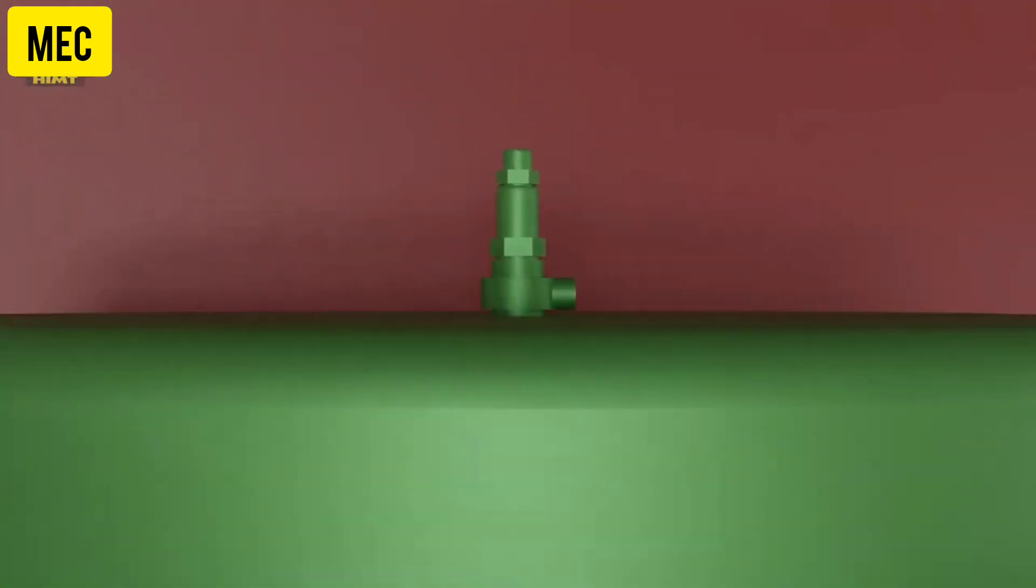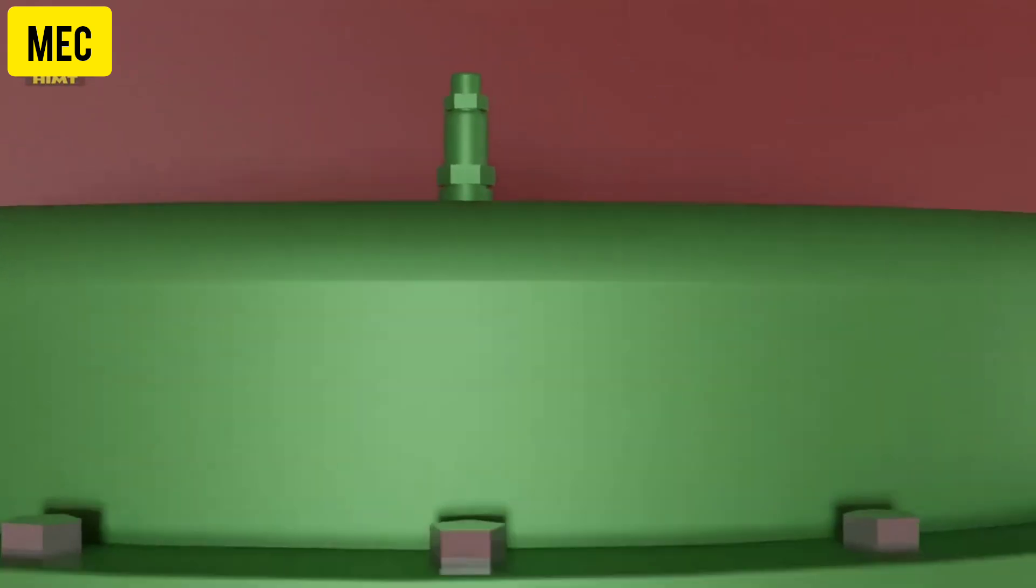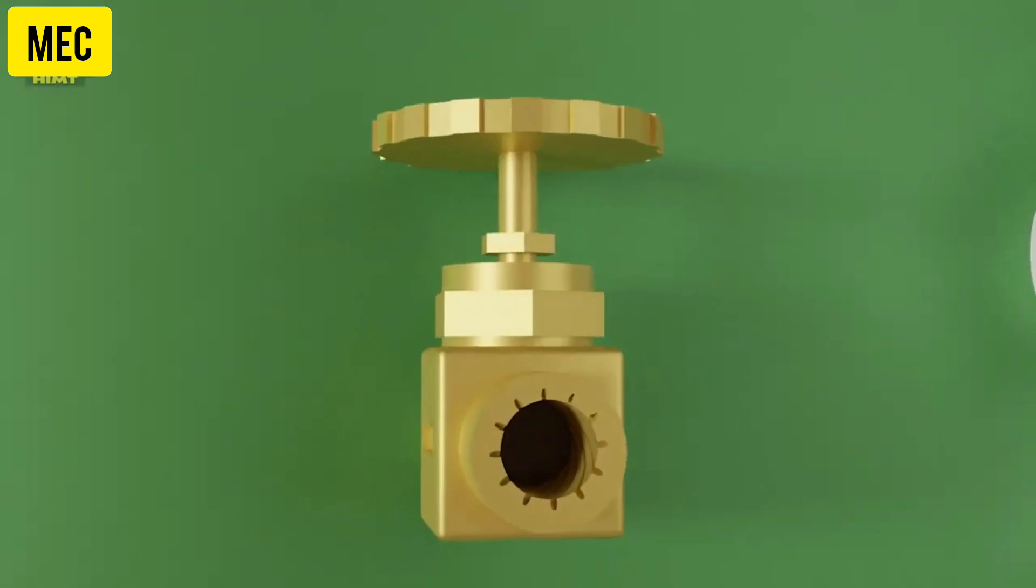Next we have a safety valve. Safety is of utmost importance, and that's why a safety valve is installed to safeguard against overpressure. We must also consider the vacuum breaker, which comes into action when the freshwater generator is stopped. Its purpose is to break the vacuum, allowing for a smooth shutdown of the system.